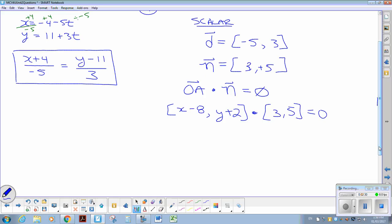So we just got to apply the dot product here. So we'd have 3x minus 24, so distributive law, plus 5y plus 10.